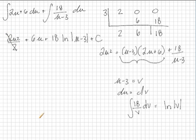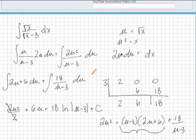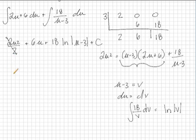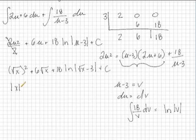Let's go ahead and simplify and put things back in terms of x here. So we have the square root of x squared plus 6 times the square root of x plus 18 times the natural log of the absolute value of the square root of x minus 3 plus c. This first term becomes the absolute value of x and everything else will stay the same.